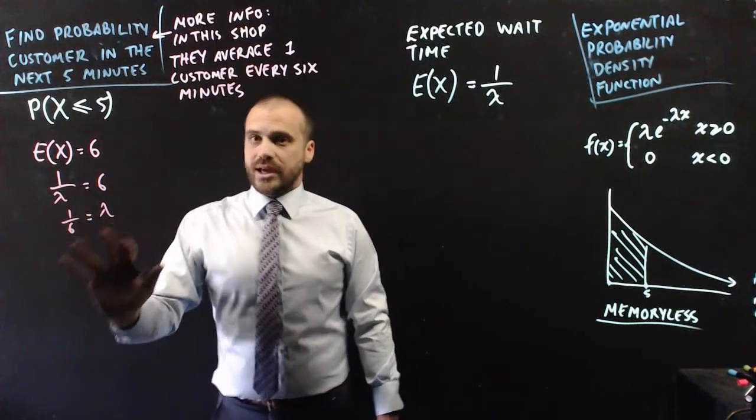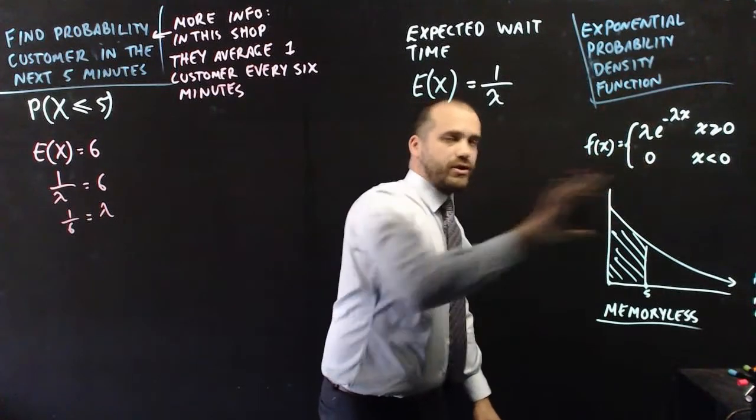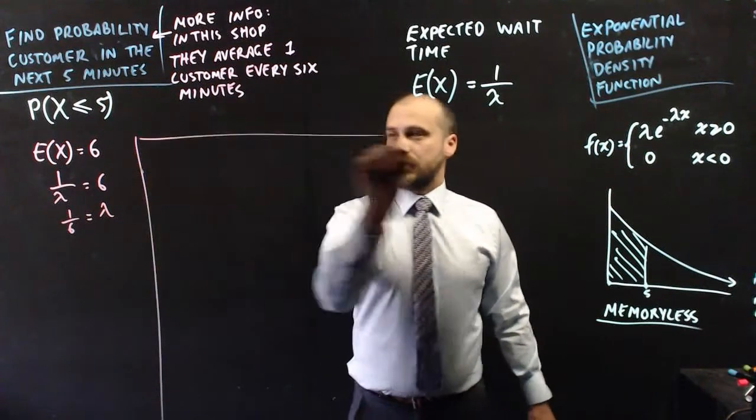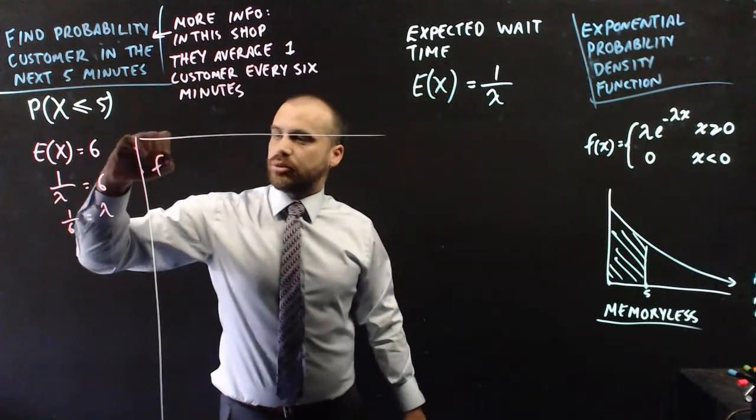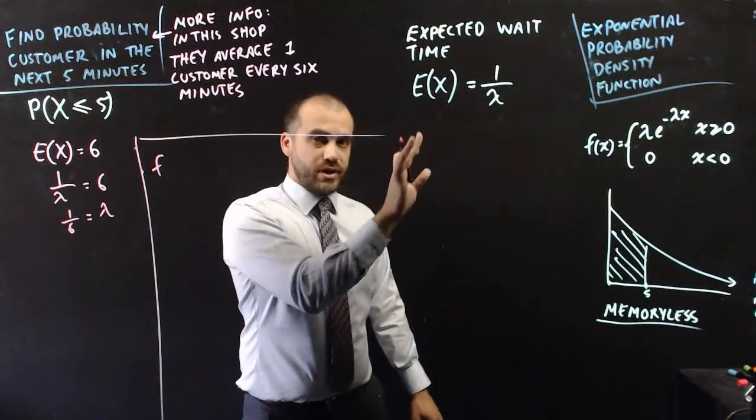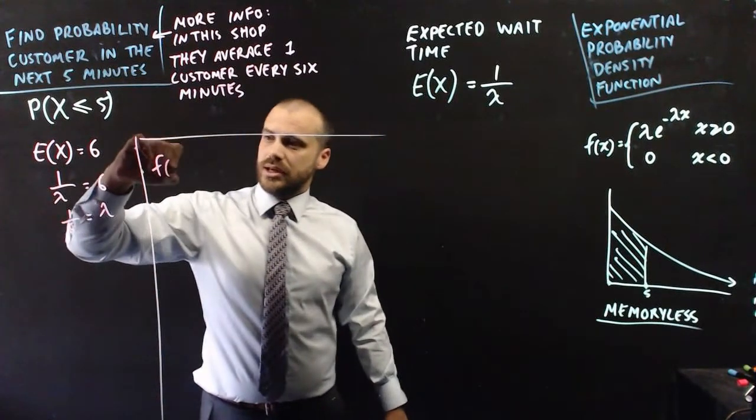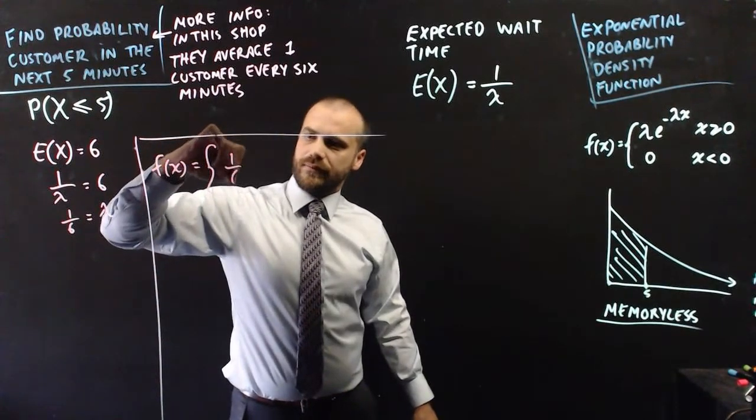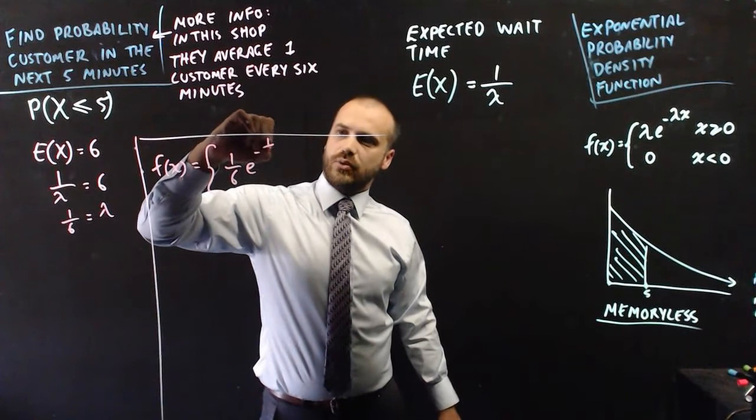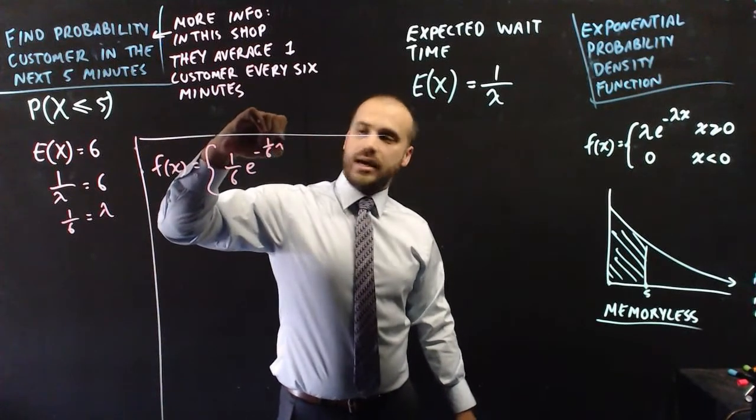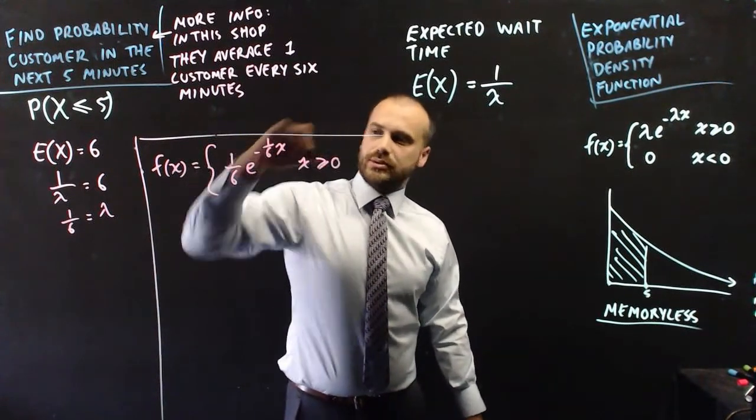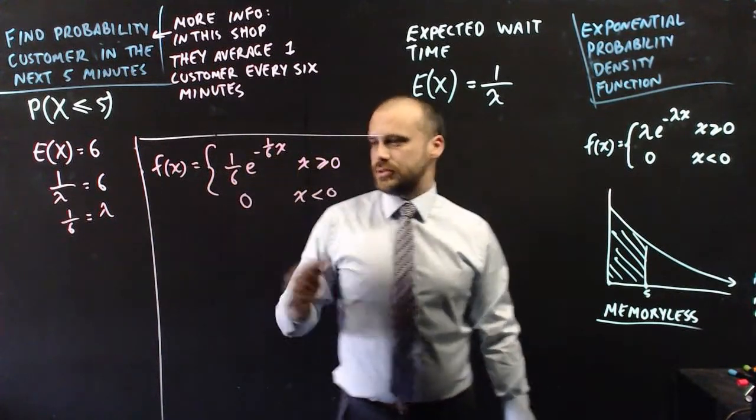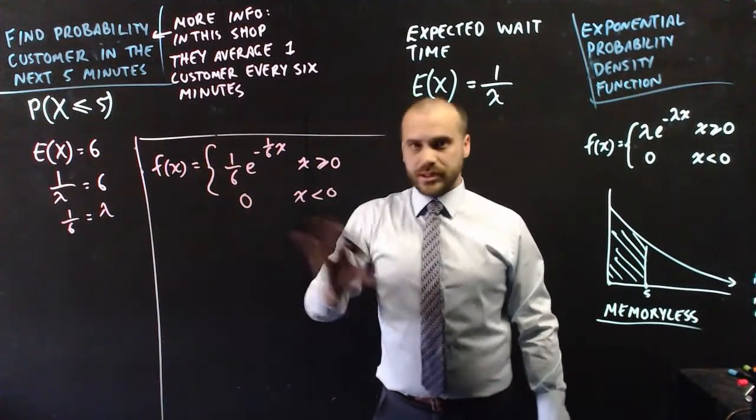And with that little extra piece of information we now know everything we need to be able to figure out this thing here. All right. So we know our probability density function for this particular question is f of x equals one sixth e to the negative one sixth x where x is greater than or equal to zero and zero where x is less than zero. So there is our probability density function.